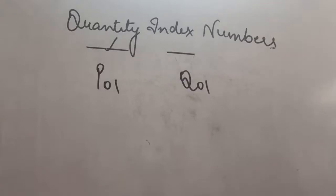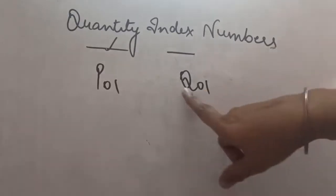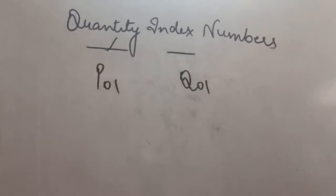The index number may also be constructed to measure a change in the physical quantity of goods produced, consumed, or sold. We can calculate Quantity Index Numbers with a simple method. Just we will be replacing Q in the place of P. That will become our Quantity Index. And that will be applicable for all our weighted aggregative formulas that we have discussed in the previous videos.